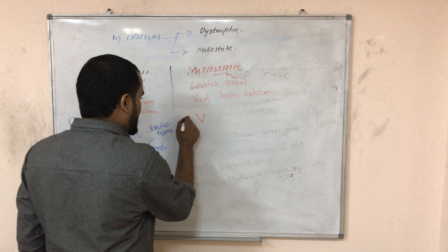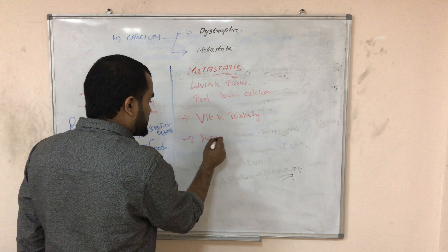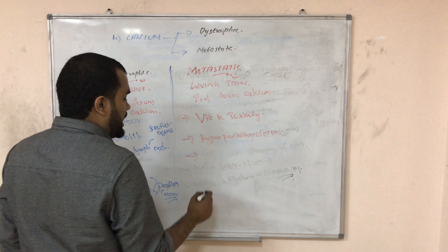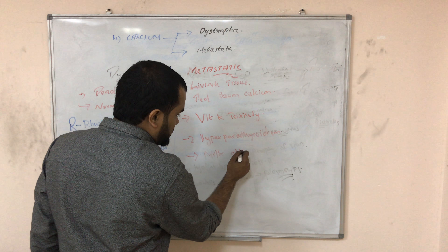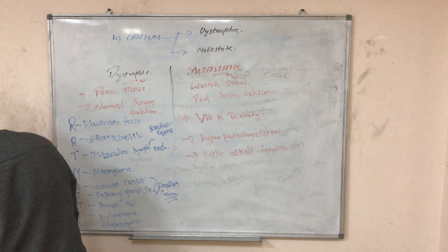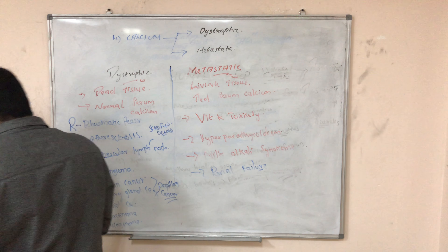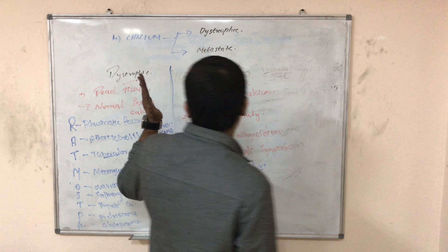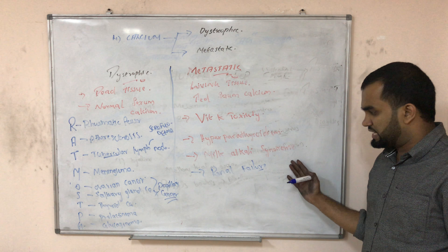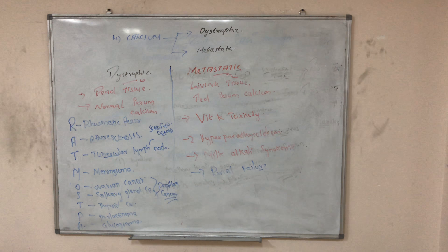For metastatic calcification, the causes include vitamin D toxicity (causing excess calcium in blood), hyperparathyroidism, milk-alkali syndrome (from excess milk intake), and renal failure (since the kidney normally excretes calcium). These all cause raised serum calcium, leading to metastatic calcification. That covers intracellular accumulation of substances.